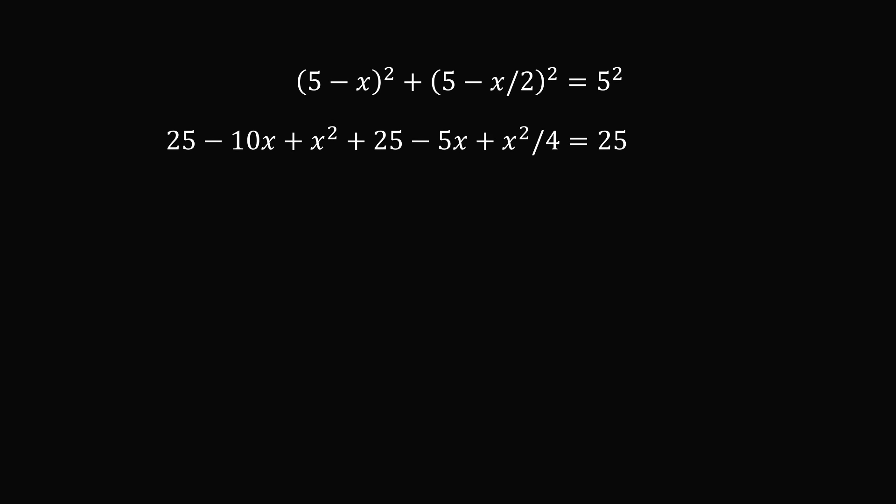We now have a right triangle which is a mathematician's best friend. So we can focus just on this right triangle. Since we have a right triangle, the square of 5 minus x plus the square of 5 minus x over 2 is equal to the square of 5.